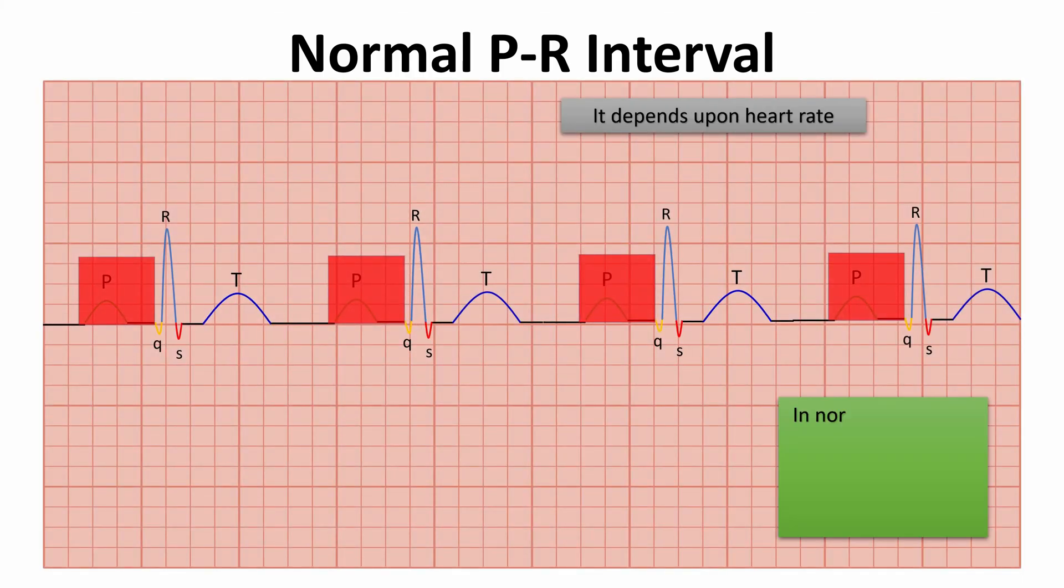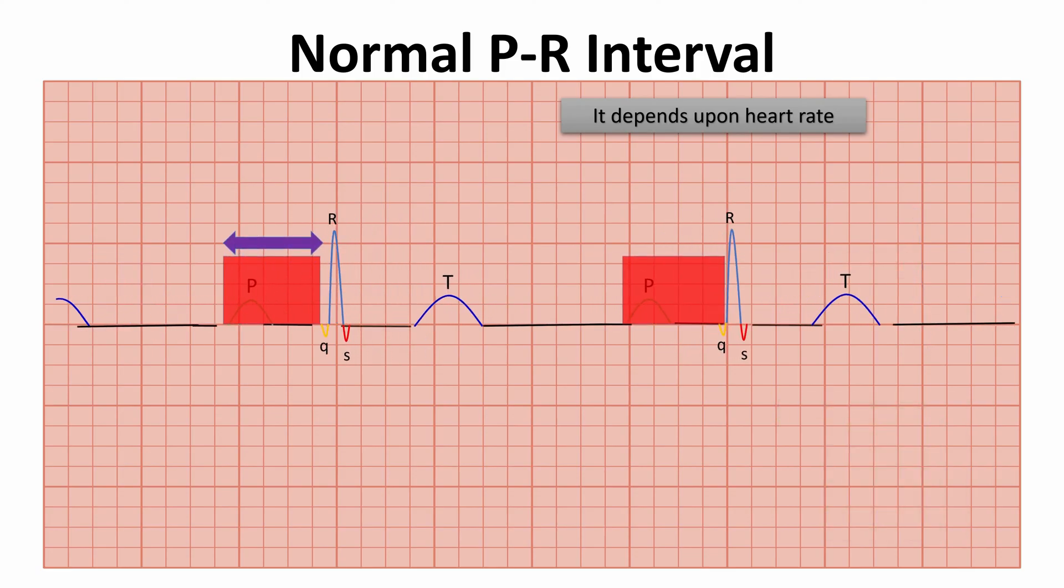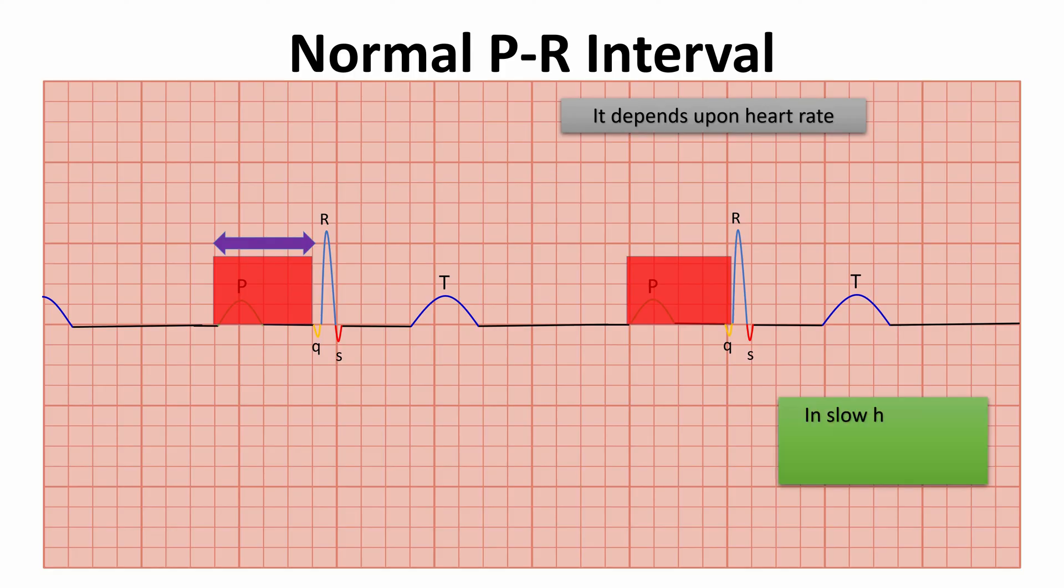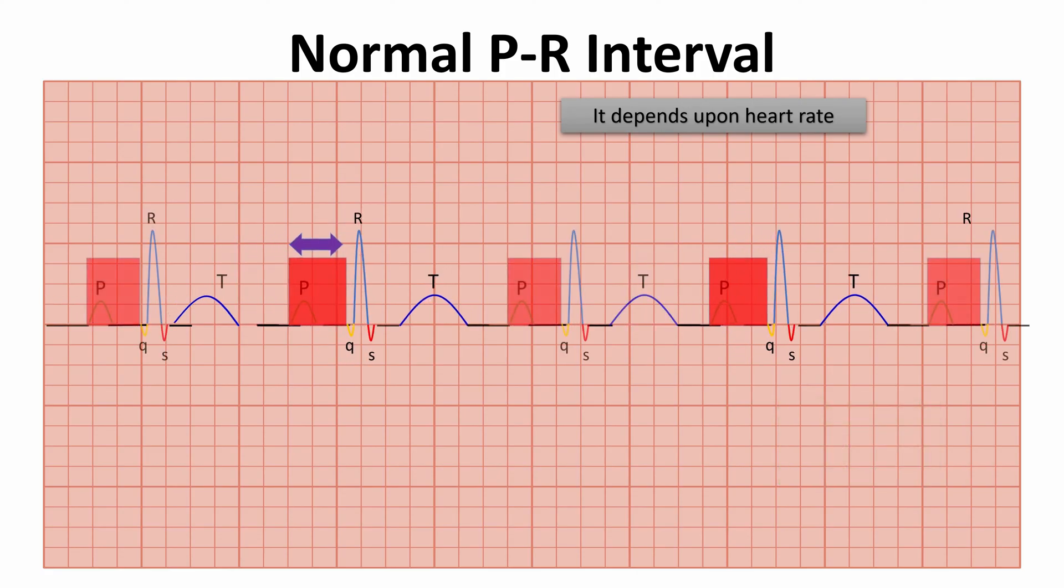In normal heart rate, the PR interval is in the normal range of 0.12 to 0.20 seconds. The PR interval is prolonged at slow heart rates and shortened at fast heart rates.